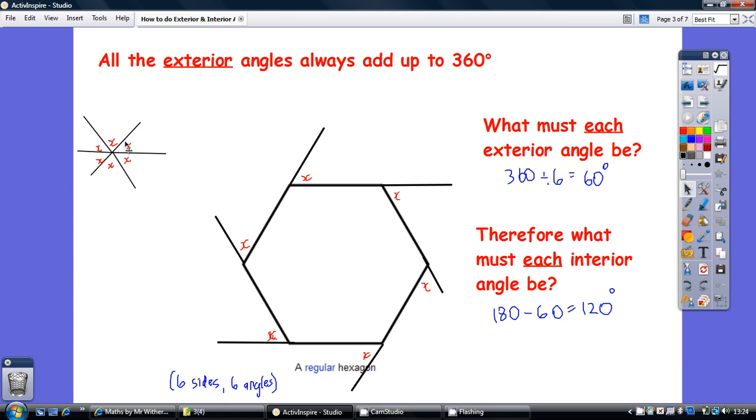So how do you work out how much each one must be? Well you just divide 360 by the number of sides, in other words the number of angles. So for this hexagon, each exterior angle must be 360 divided by 6, which is 60 degrees.